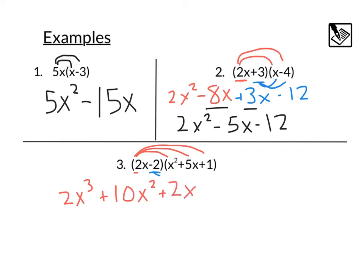Our next term, negative 2 times x squared, would be negative 2x squared. Negative 2 times 5x, negative 2 times 5 is negative 10, and then we've got the x. And negative 2 times 1 is just going to be minus 2, 2 times 1 is 2. From there, it looks like we've got like terms 10x squared and negative 2x squared. We've also got like terms 2x and negative 10x.